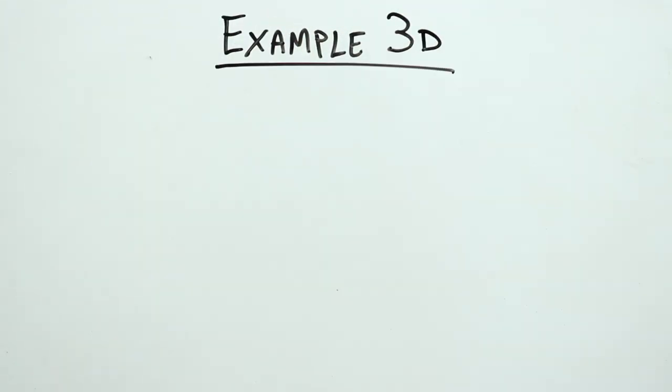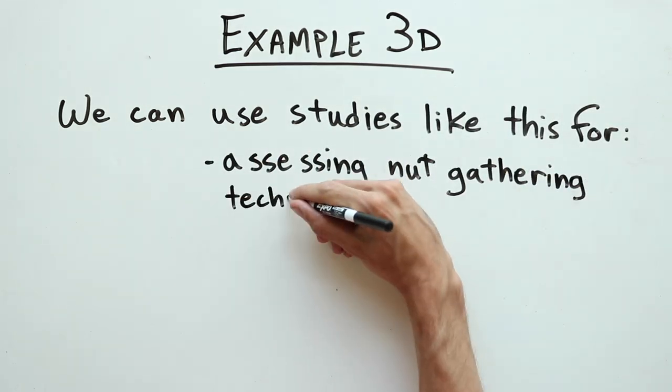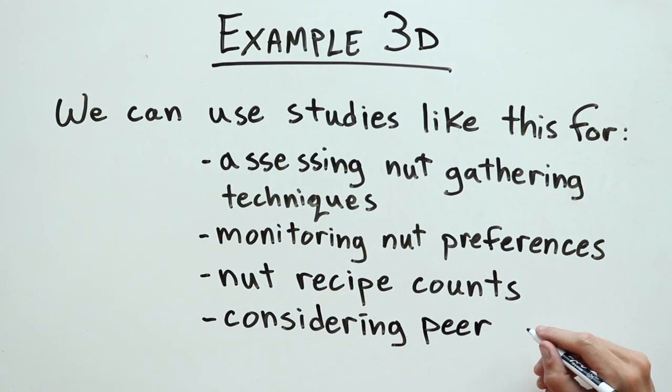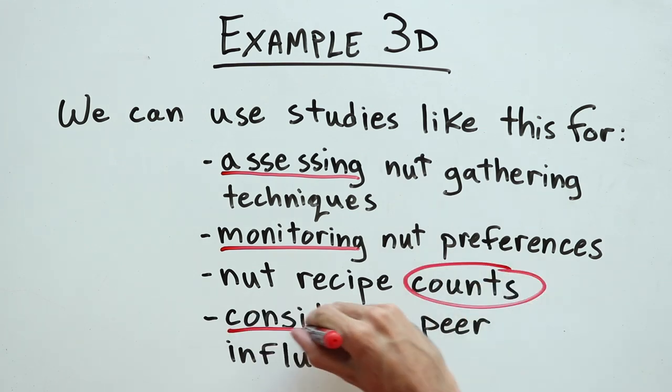In this last example, she wrote, We can use studies like this for assessing nut-gathering techniques, monitoring nut preferences, nut recipe counts, considering peer influences. What do you think? Is this in parallel form? These words are in a list, but are they still linked in some way? Well, the list doesn't sound right, so let's see if we can rewrite it and make it sound smoother.